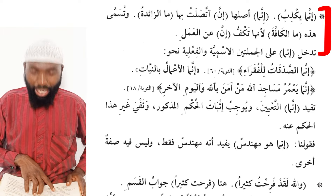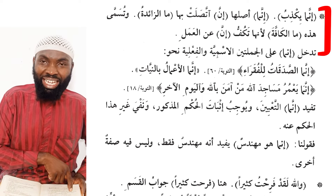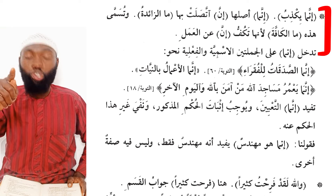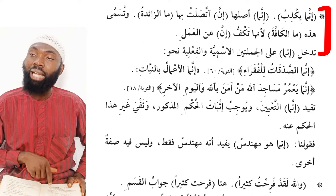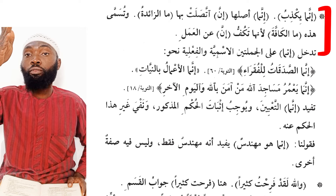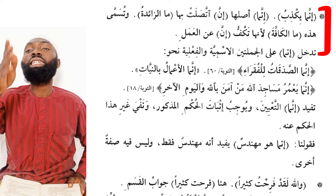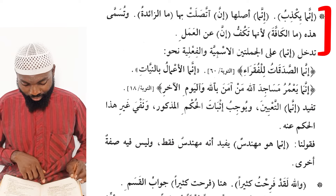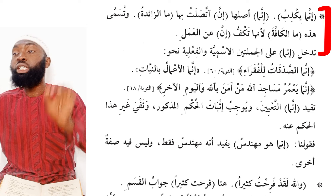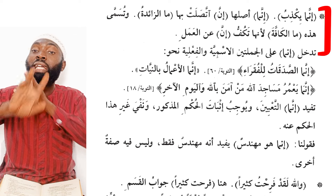The origin of 'innama' is 'inna' with 'ma' added to it. This 'ma' that has been added is called the 'ma' which restricts, because it stops 'inna' from the work of 'inna.' The word 'innama' can be introduced to both the nominal sentence — jumlat ismiyya — and the verbal sentence — jumlat fi'liyya.